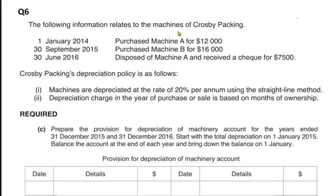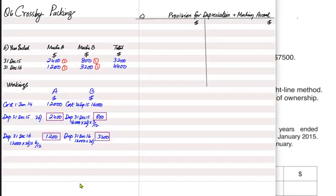Machine B was bought at the end of September 2015, so it was only used for three months in 2015 — October, November, and December. We apply 20% on 16,000 to get the full-year depreciation of 3,200, then pro-rata for 3 out of 12 months, giving 800 for 2015.